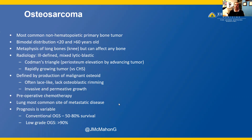Osteosarcoma is the most common non-hematopoietic primary bone tumor with a bimodal age distribution in patients younger than age 20 and greater than age 60. It generally occurs in the metaphysis of long bones, often around the knee, but can affect any bone. Radiographically, osteosarcomas are generally ill-defined mixed lytic and blastic tumors, often with a Codman's triangle — when the periosteum is lifted by the advancing tumor front. Osteosarcoma is defined by the production of malignant osteoid, which is often lace-like and lacks osteoblastic rimming.